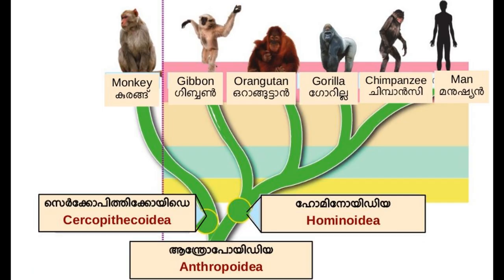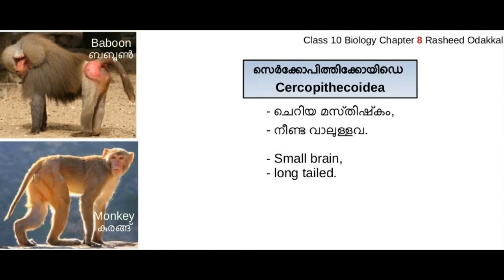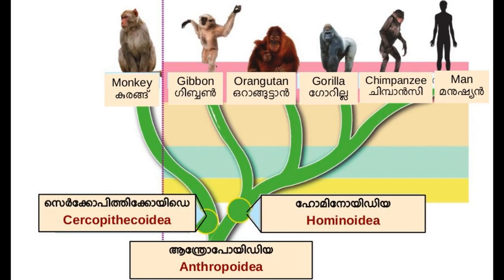Humans, chimpanzee, gorilla, orangutan, and gibbon are included in the hominoidea category, but long-tailed monkeys are included in another category called cercopithecoidea. From this, it can be understood that humans did not evolve directly from monkeys. Both the cercopithecoidea and hominoidea are included in the category of anthropoidea. That means both these groups may have had a common ancestor in anthropoidea.